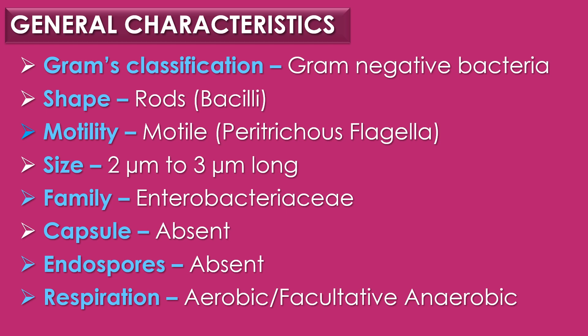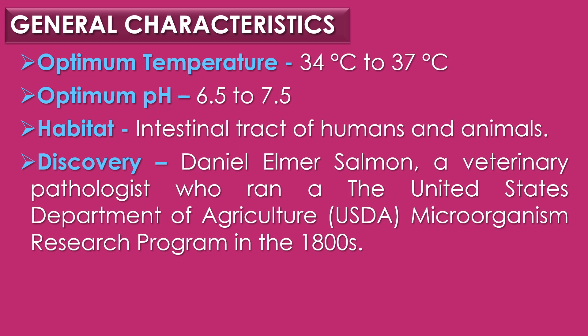The mode of respiration is aerobic or facultatively anaerobic. The optimum temperature for cultivation of Salmonella species is 34 to 37 degrees Celsius and the optimum pH is 6.5 to 7.5. They are present in the intestinal tract of humans and animals. The genus Salmonella was named after Daniel Elmer Salmon, a veterinary pathologist who ran a USDA microbial research program in 1800, who together with Theobald Smith found Salmonella in hogs that succumbed to hog cholera.